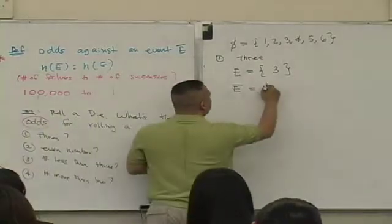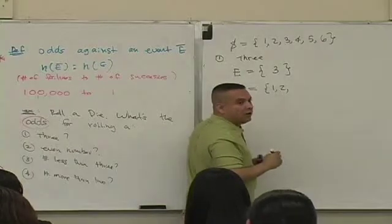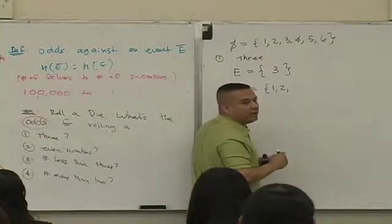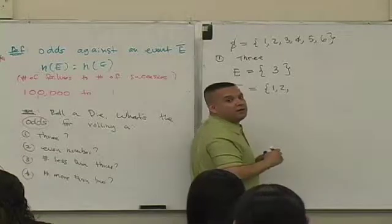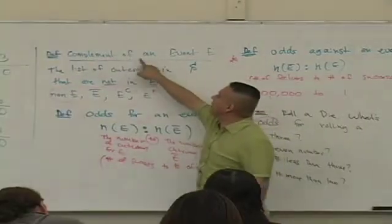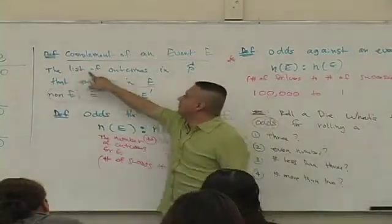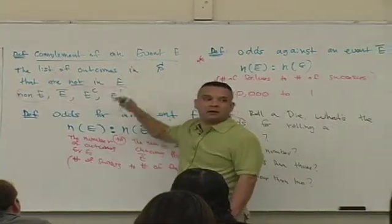Yeah, what are they? One, two, what else? Don't tell me three, why not? Why not three? The complement of an event is the list of outcomes in the sample space that are not in the event.